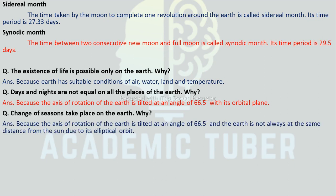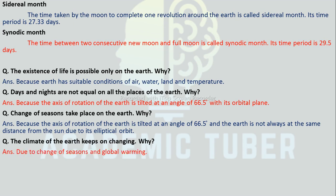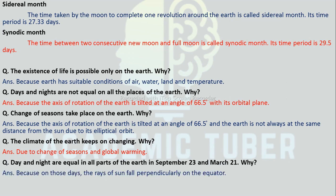Why do changes of season take place on Earth? Changes of season take place on Earth because the axis of rotation of the Earth is tilted at an angle of 66.5 degrees, and the Earth is not always at the same distance from the Sun due to its elliptical orbit. Why does the climate of Earth keep on changing? The climate of Earth keeps on changing due to the change of seasons and global warming. Why are days and nights equal in all parts of the Earth on September 23 and March 21? Because on those days the rays of the Sun fall perpendicularly on the equator.